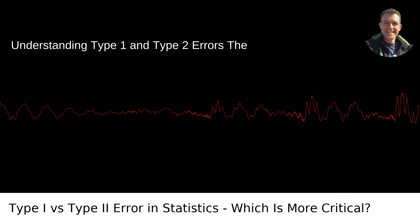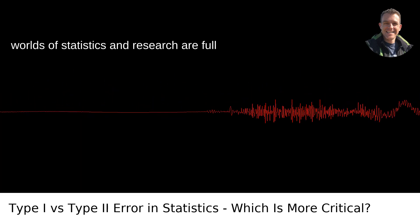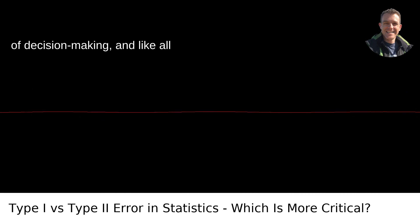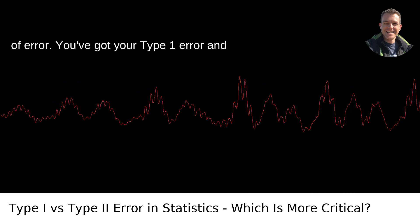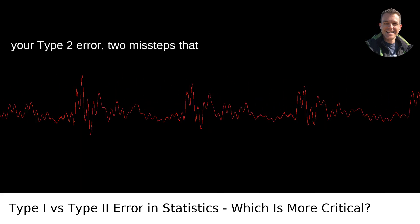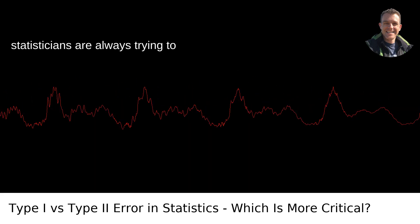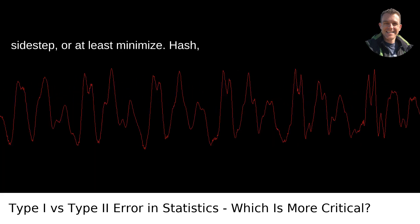Understanding Type 1 and Type 2 Errors. The worlds of statistics and research are full of decision-making, and like all decisions, they're never without the risk of error. You've got your Type 1 error and your Type 2 error, two missteps that statisticians are always trying to sidestep, or at least minimize.